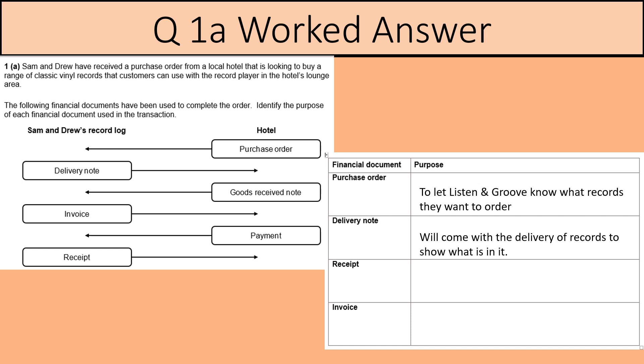The delivery note will come with the box of records to show what's in it — 10 records, this one, this one, this one — and they'll check it off.